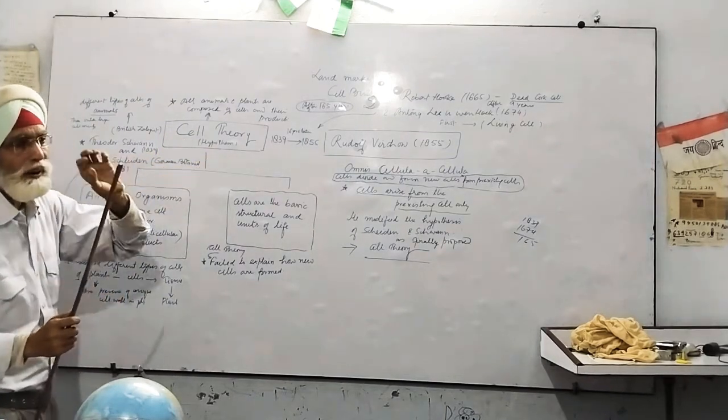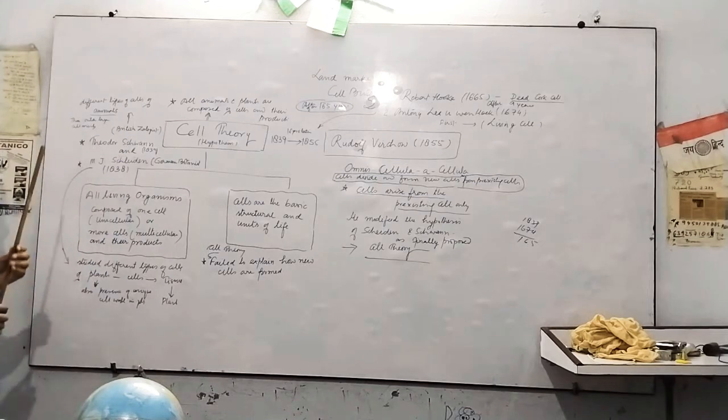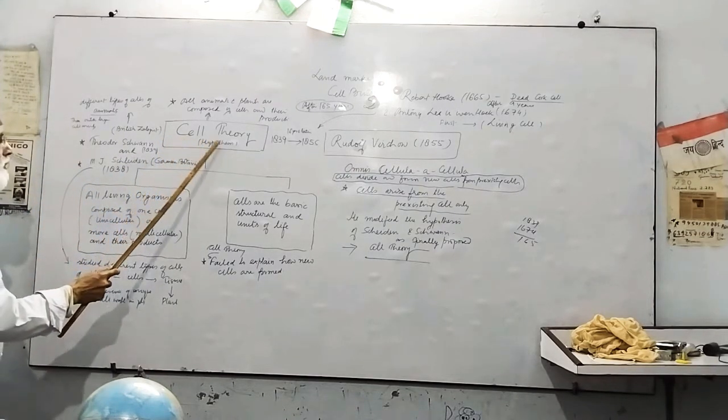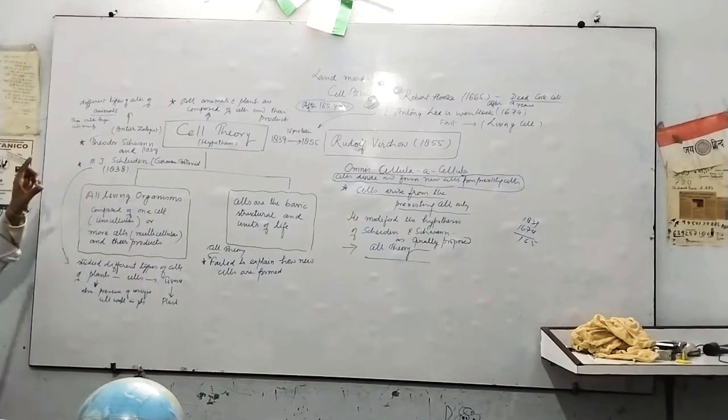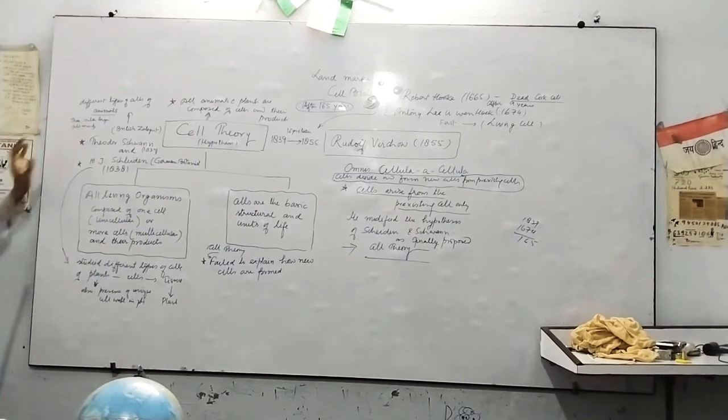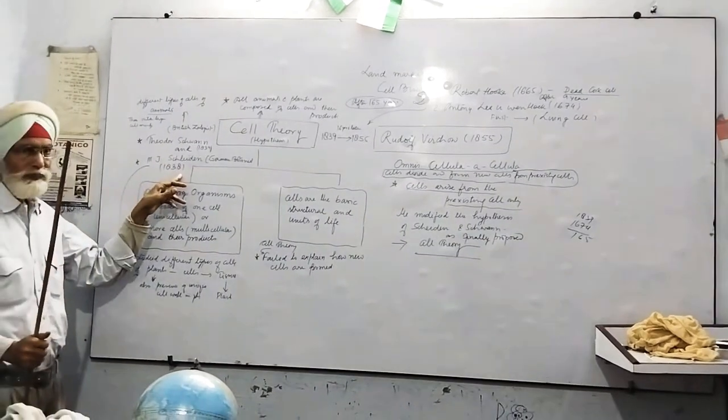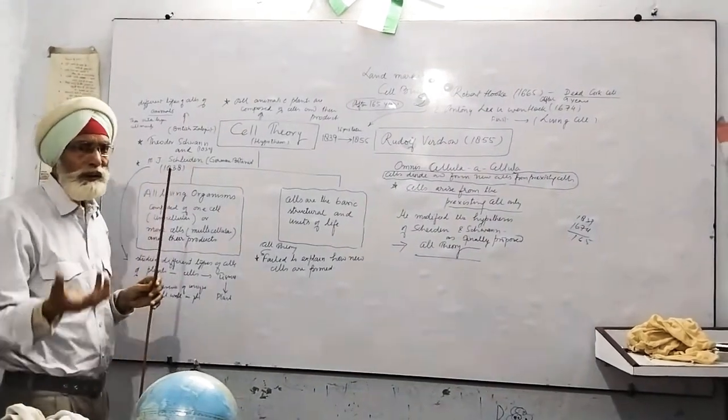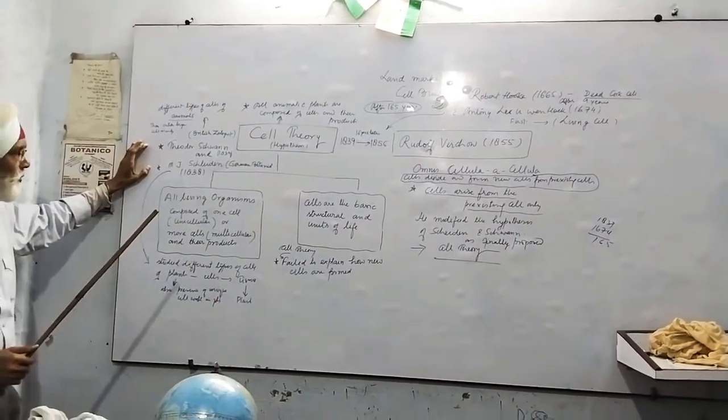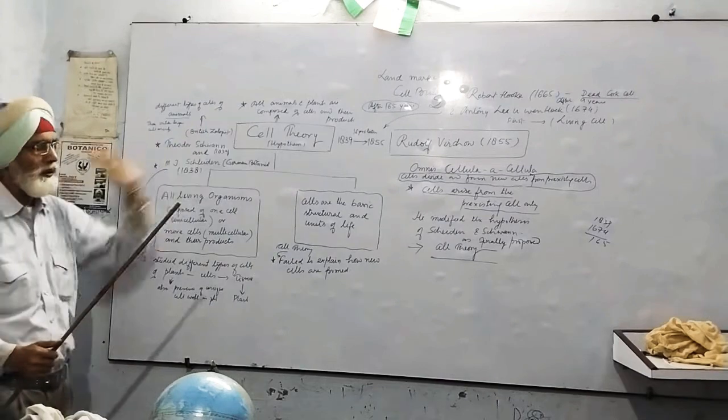Cell theory was a hypothesis because it was not scientifically proved. So now you see that this cell theory was given by the two most important biologists. The first one is Theodore Schwann and M.J. Schleiden. One of them is British scientist and the other is German botanist. These are the two scientists who discovered cell theory.